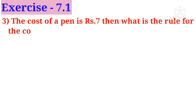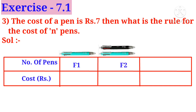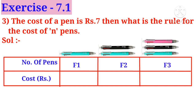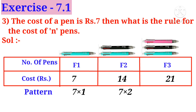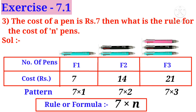Third problem: the cost of a pen is seven rupees. What is the rule for the cost of n pens? Solution: one pen costs seven rupees, two pens cost fourteen rupees, three pens cost twenty-one rupees. The pattern is: 7×1, 7×2, 7×3. Observe that seven is constant and the numbers one, two, three are changing. So the rule is seven into n.